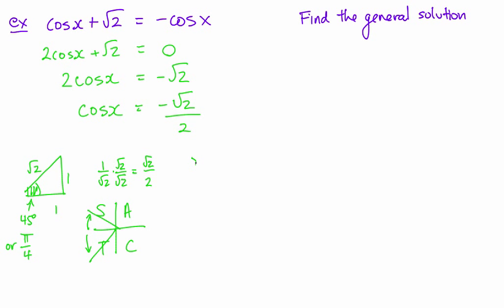So x could be equal to, well this would be 180 degrees or π, 4π/4. So it's 3π/4 or 5π/4. And the equivalent to this is x is 135 degrees or x is equal to 225 degrees. That's the solutions between 0 and 2π.